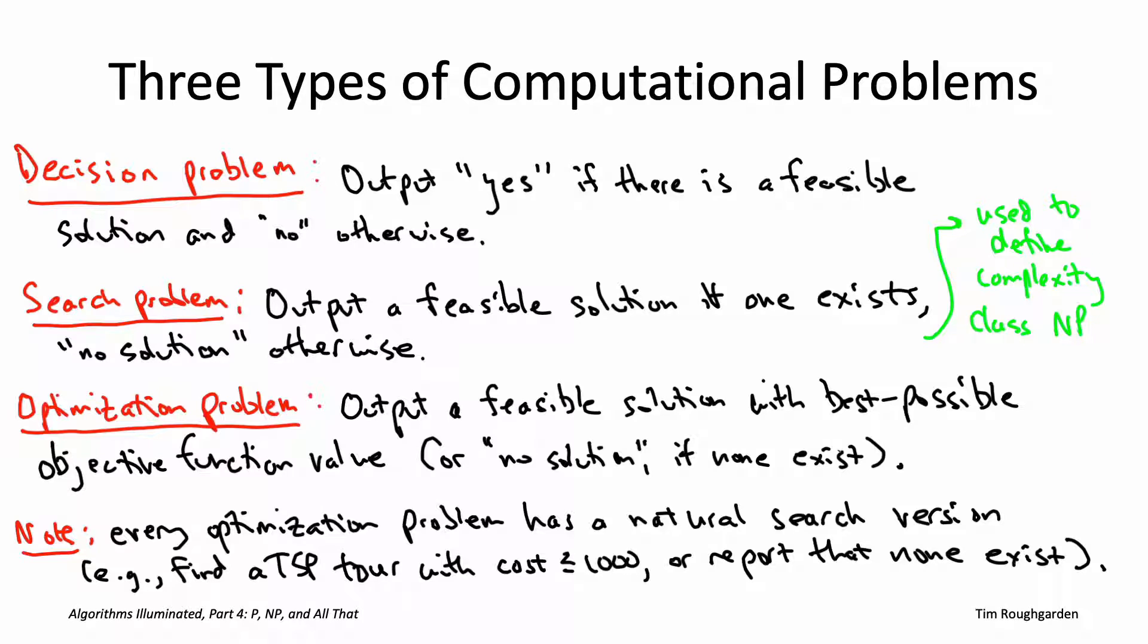I could just use that subroutine over and over again inside a loop that's binary searching over the target objective function value capital T, and I could use that subroutine to compute a minimum cost traveling salesman tour. Given a magic box solving the search version, I actually can solve the optimization problem as well.